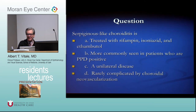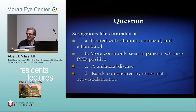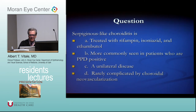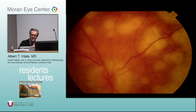Serpiginous-like choroiditis can be unilateral or bilateral. It's frequently complicated by choroidal neovascularization and is more commonly seen in patients who are PPD-positive, making TB an important association.